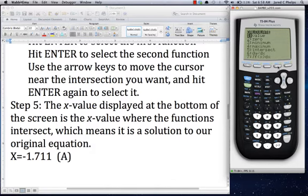All we should need to do is go 2nd TRACE, choose 5 for intersect. I'll hit enter for the first curve, enter for the second curve. Now this time my guess needs to be all the way over here. You can either hit these buttons to get over there, or you can actually just type in a number. It looks like it's about 2, so just hit 2 and enter. It'll think and think and think again, and come back and tell us that that point of intersection is 1.597.